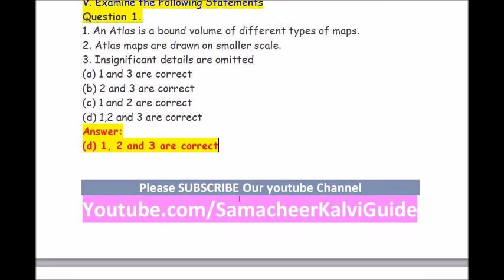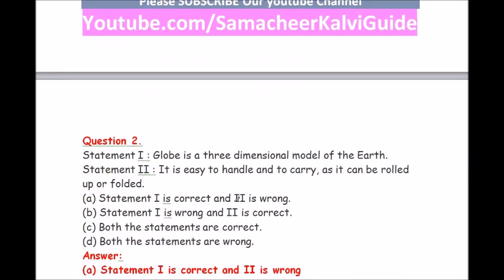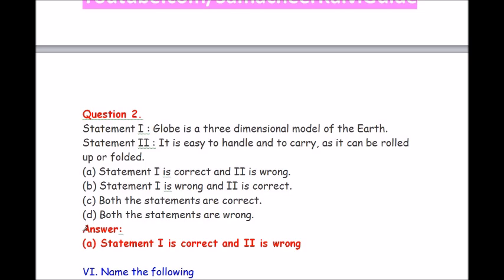Question 2: Statement 1 — globe is a three-dimensional model of the earth. Statement 2 — it is easy to handle and carry as it can be rolled up or folded. Options: statement 1 correct and 2 wrong; statement 1 wrong and 2 correct; both correct; both wrong. Answer: statement 1 is correct and 2 is wrong.